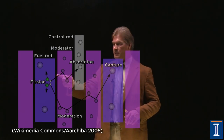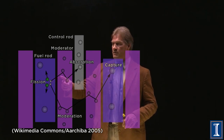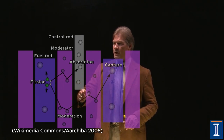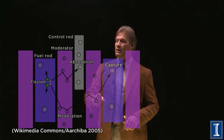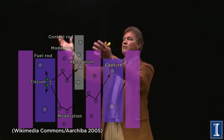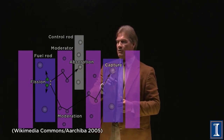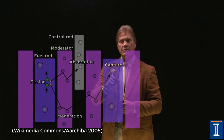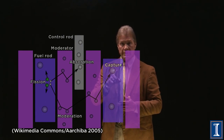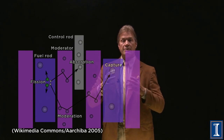The next thing is that you see that the neutrons are produced. These are the fast neutrons, and they bounce around on the moderator. The moderator is the water flowing through the reactor. Eventually, when they slow down enough, they can be captured by another uranium nucleus and cause another chain reaction, and the reactor can continue.